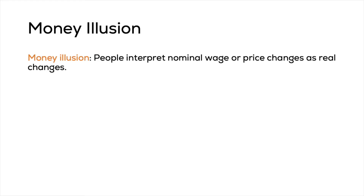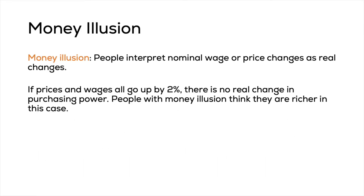Money illusion is a common cost that people face with inflation. It is when people mistake nominal changes for real changes. For example, if you receive a three percent increase in your wages and spend it as if it's a real increase, but inflation unexpectedly rises to five percent, you are actually worse off. Money illusion is when you receive a nominal increase in wages but believe it is a real increase — and it is not.